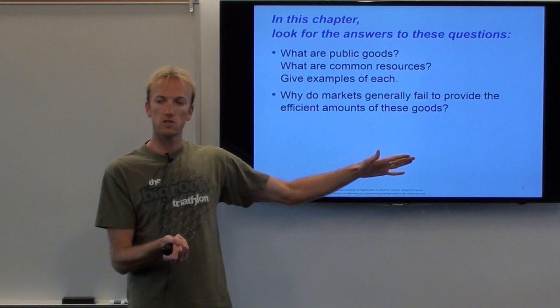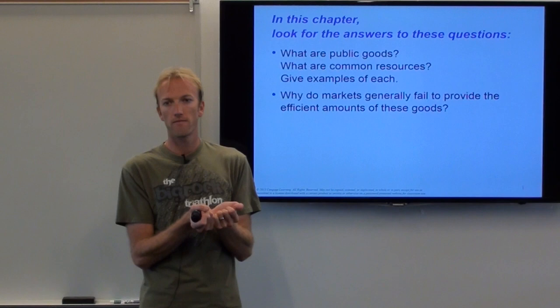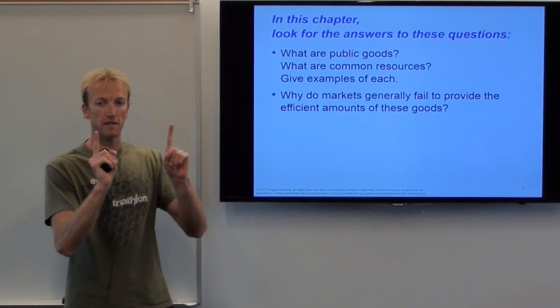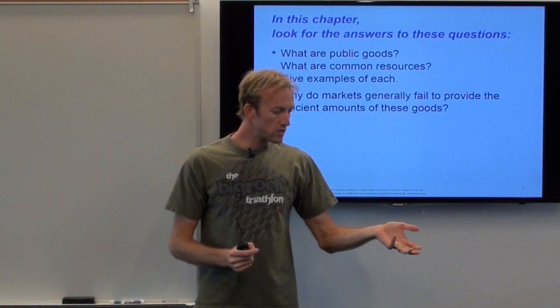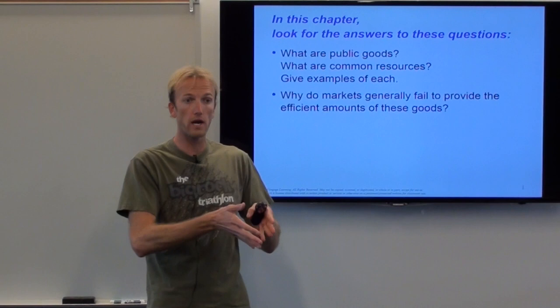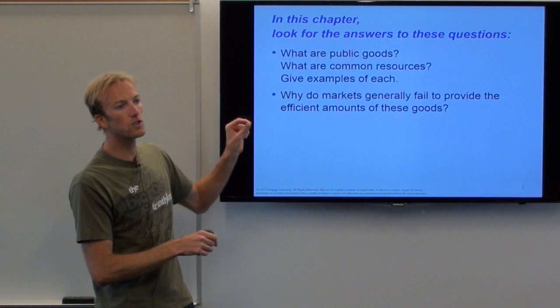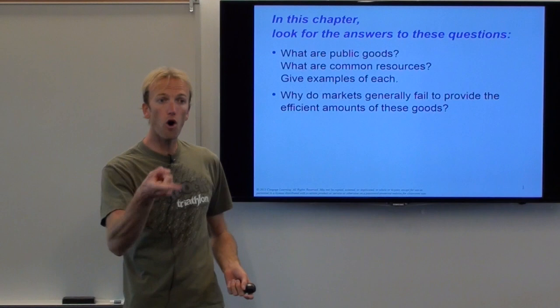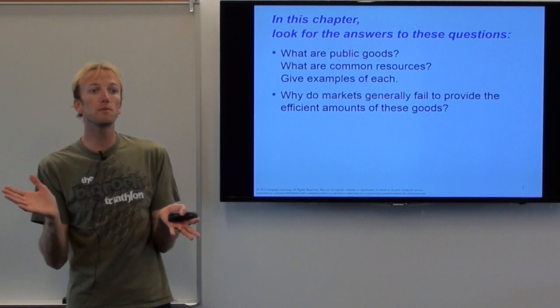Just like we learned about in chapter 10 with externalities, when there's a market failure, generally the government fixes it. We learned how markets can break when there is an externality — meaning somebody outside the marketplace is affected positively or negatively by the trade of a good. Here we're going to look at a marketplace for public goods or common resources that are also broken for a different reason, and the appropriate response could be to have the government step in.